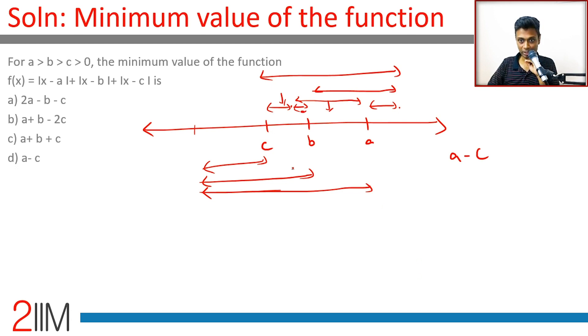And then we have only this remaining. The best case scenario is going to be when x is equal to b. x minus b goes to zero, modulus of b minus a plus modulus of b minus c is nothing but a minus c.